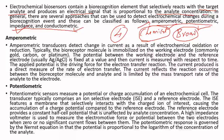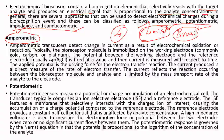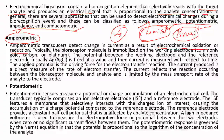What is the amperometric technique? Amperometric transducers detect the change in current as a result of electrochemical oxidation or reduction. Oxidation is the loss of an electron, and reduction is the gain of an electron — these are things we have already discussed.